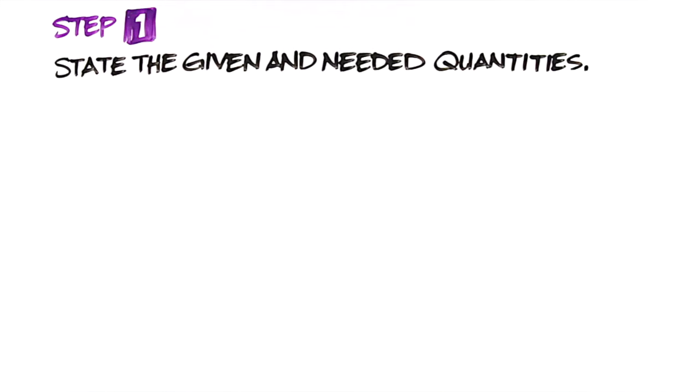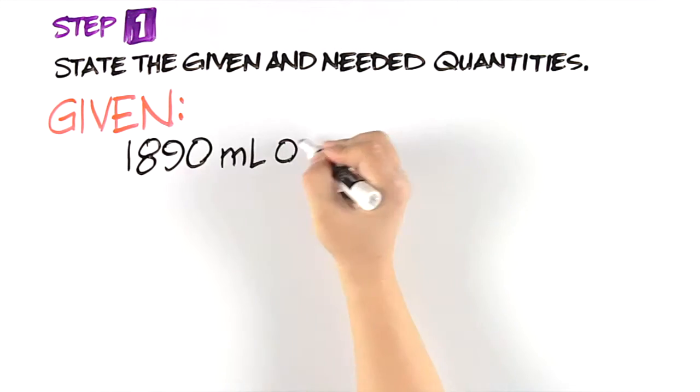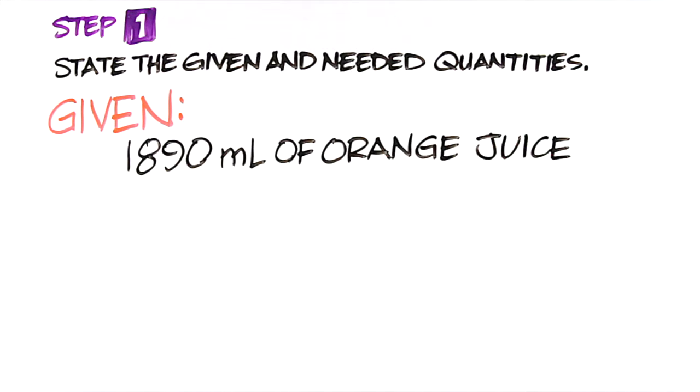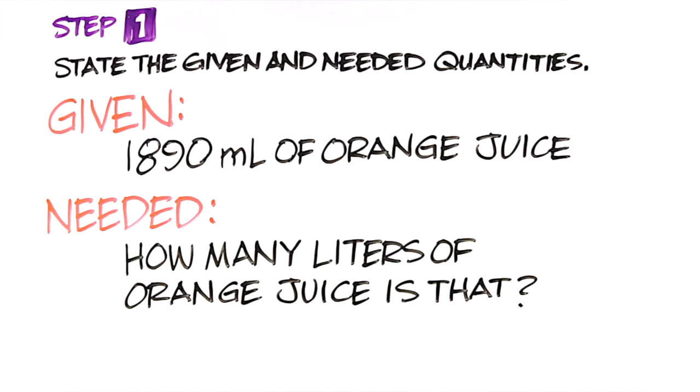The first step in solving a problem is stating the given and needed quantities. So what's given to you in this problem? In the problem, you are told that you have 1,890 milliliters of orange juice. What are you looking for? The problem is asking you to determine how many liters of orange juice you have.